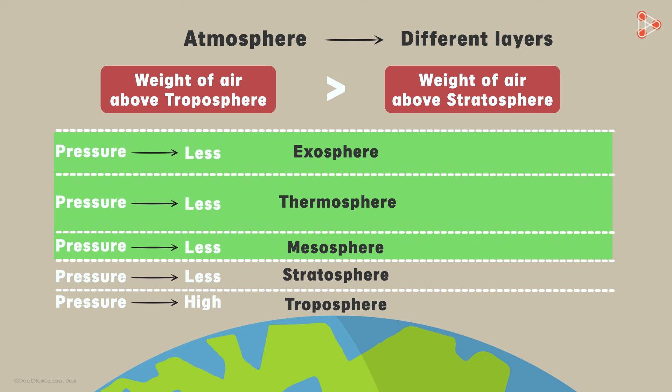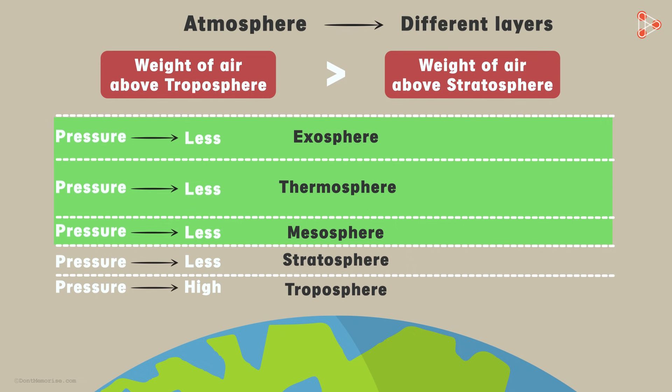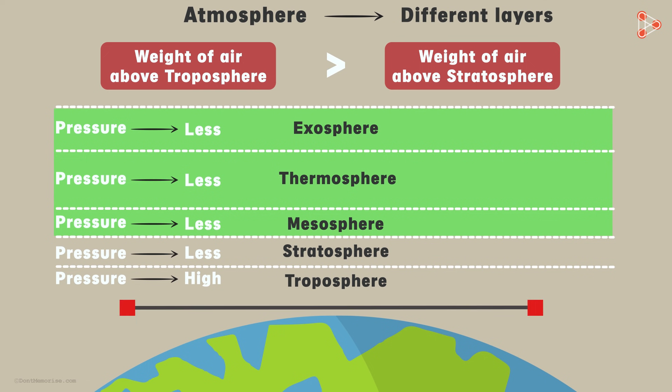The air pressure also acts in every direction and not only in the downward direction. And finally, just like the pressure in liquids, the air pressure at a particular height above the earth's surface is same in all directions. That is, if I take these two points at the same distance above the earth's surface, then the air at this point will exert an equal pressure in all directions, just like the air at this point.